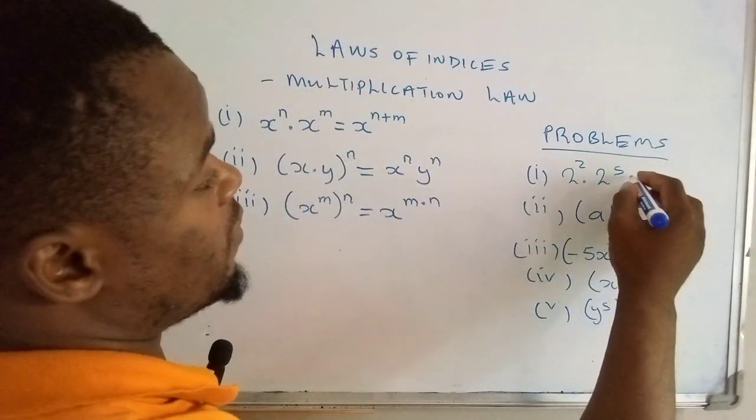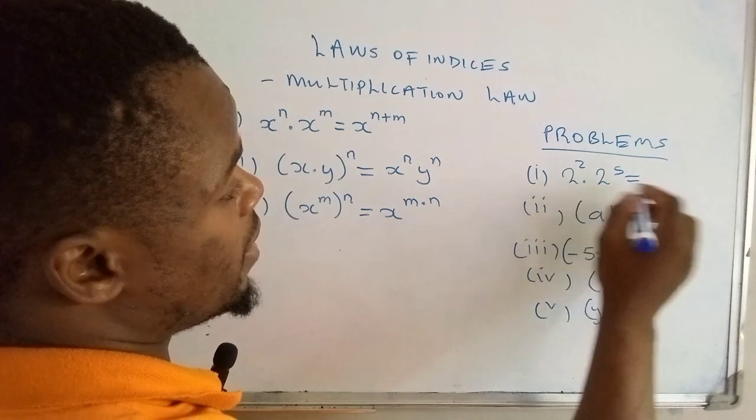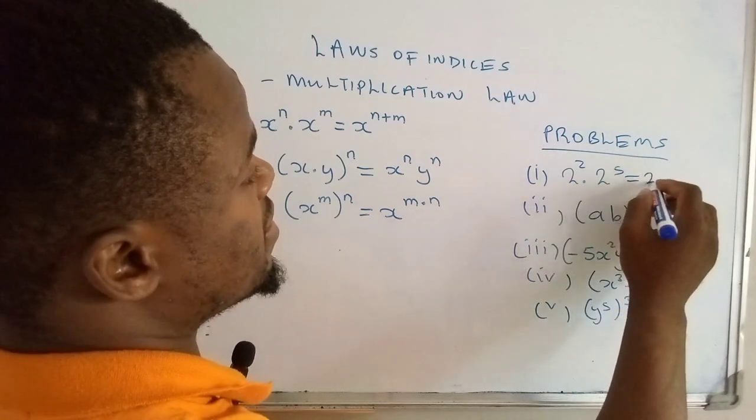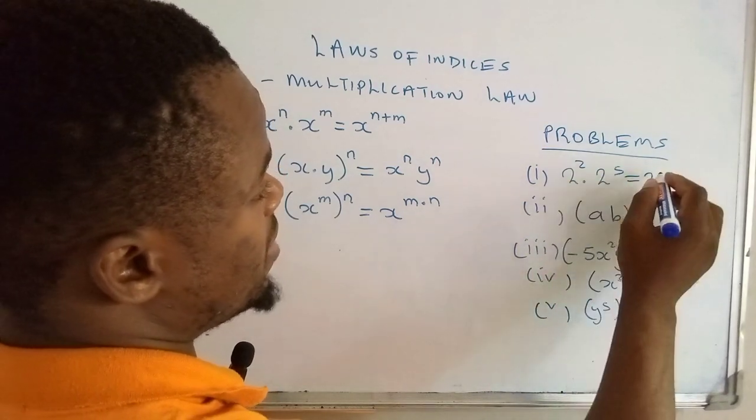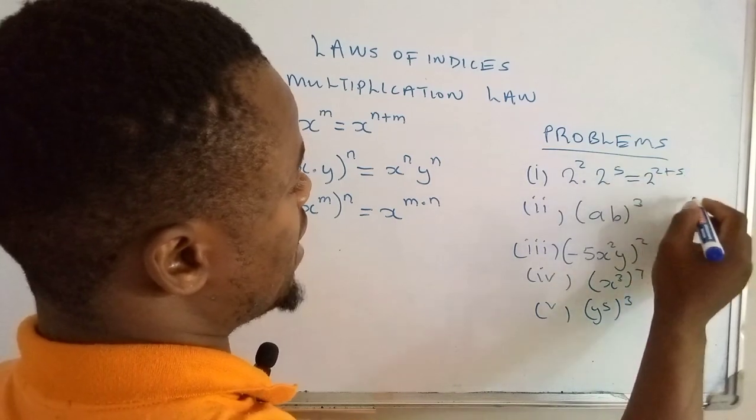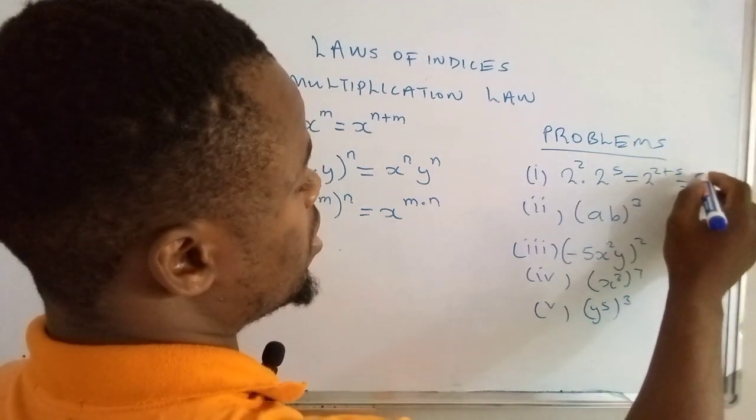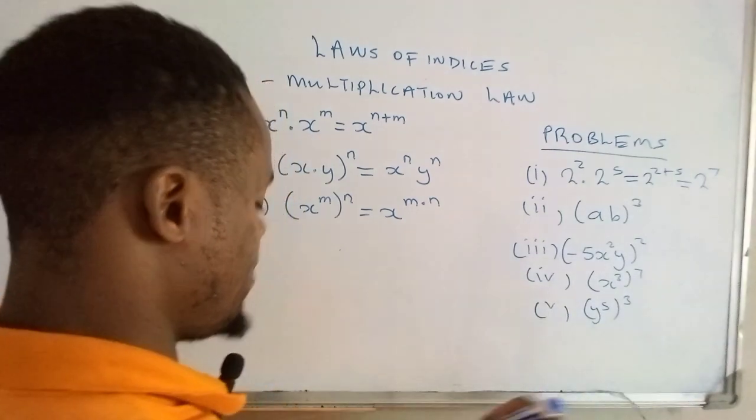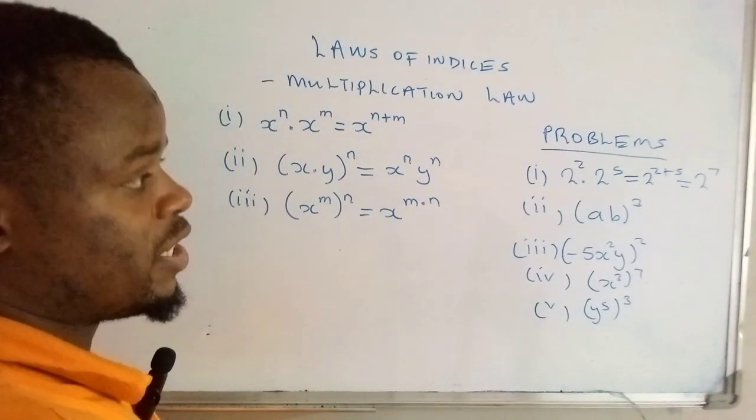Now this actually goes with the first problem here. To resolve this, you simply write the base and then add the powers, that is 2 plus 5, which equals 2 raised to the power 7.